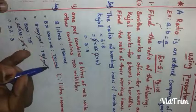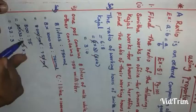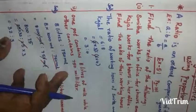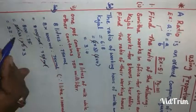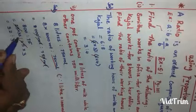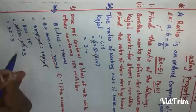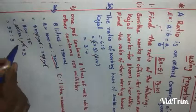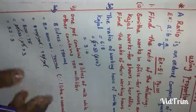That gives us 8000 milliliters is to 750 milliliters. The zeros and the milliliter units cancel. Now both are in milliliters: 800 is to 75. Writing 800 as 25 into 32 and 75 as 25 into 3, the 25s cancel, giving 32 is to 3 as the answer.